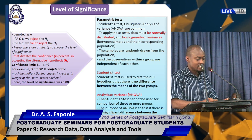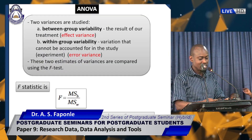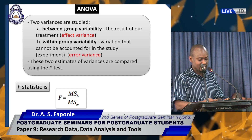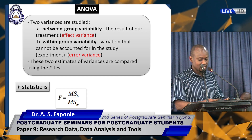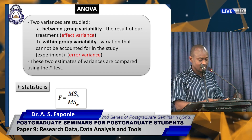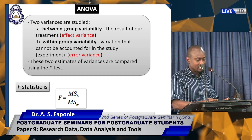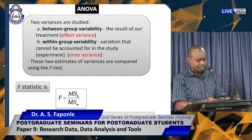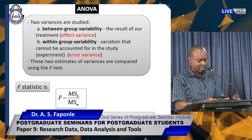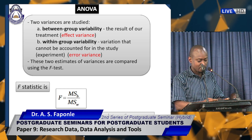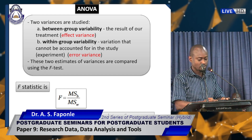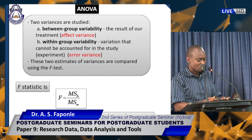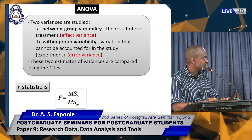In ANOVA, two variances are studied. The first is between-group variability, which is the result of our treatment. The second is within-group variability — variations that cannot be accounted for in the experiment. These two estimates of variances are compared using the F-test. The F-statistic is expressed as the mean square between groups divided by the mean square within groups. The F-test is very important and will determine whether to proceed with our analysis or not.